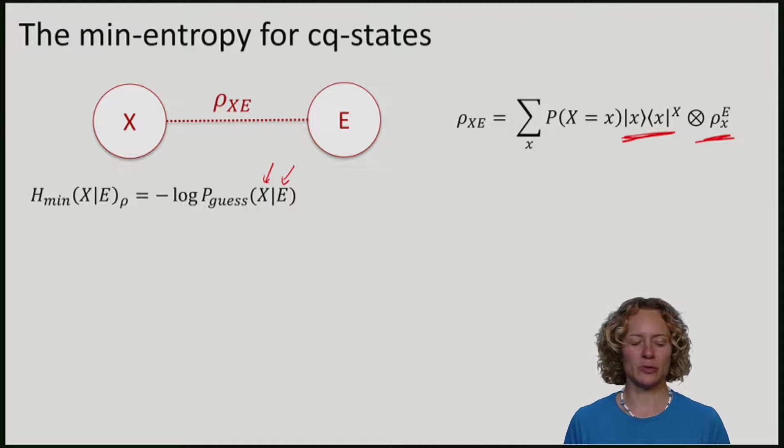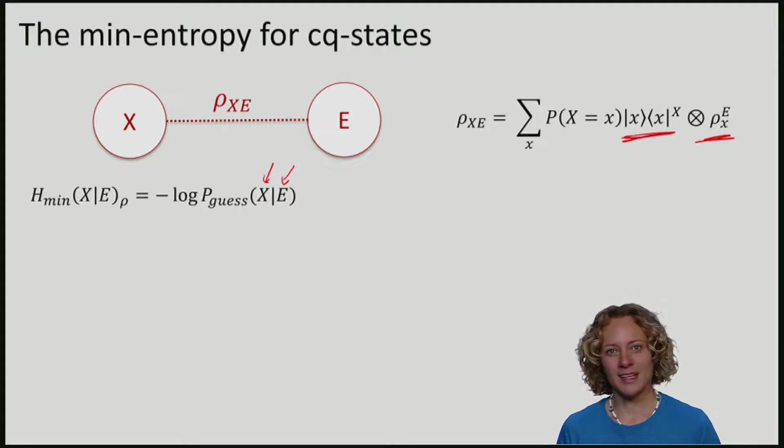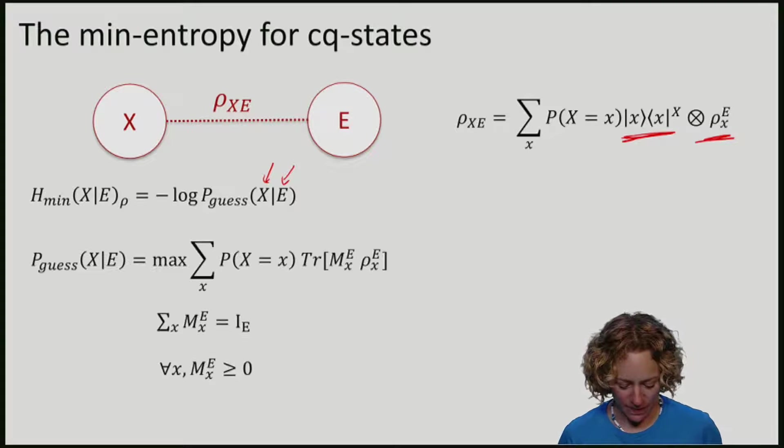Note that the state of e will be rho_x with some probability x. So what we really want to know is which state rho_x do we have. You've already seen an example of how we might try to figure out x. Namely, we're going to perform a measurement on e where we associate the measurement operators m with a classical string.